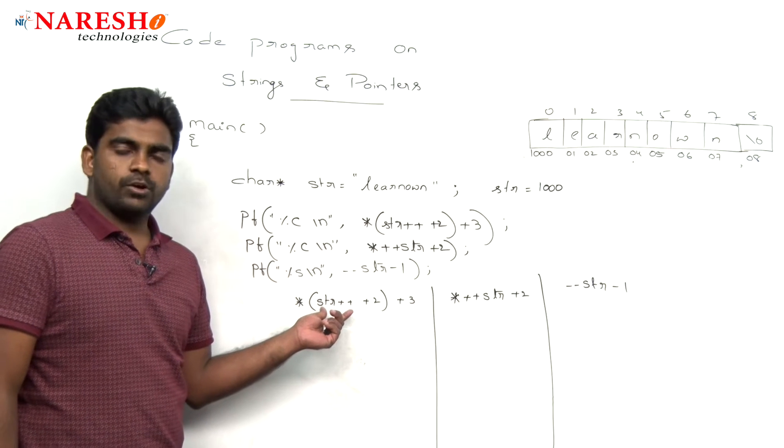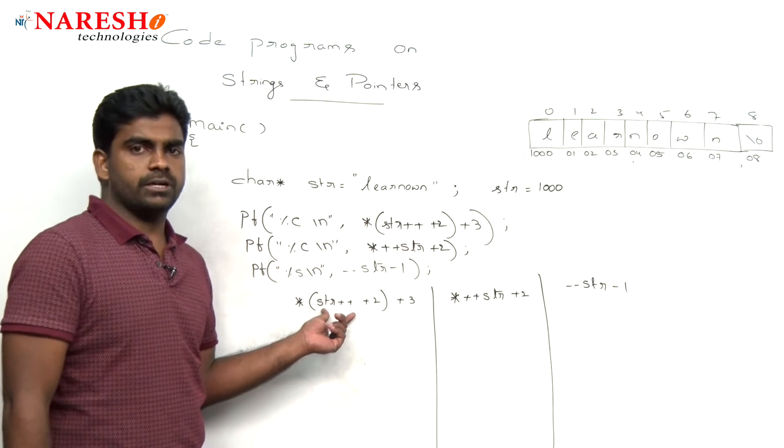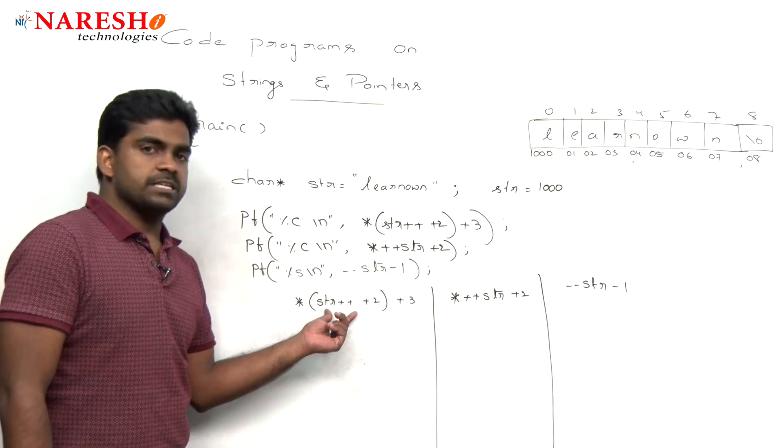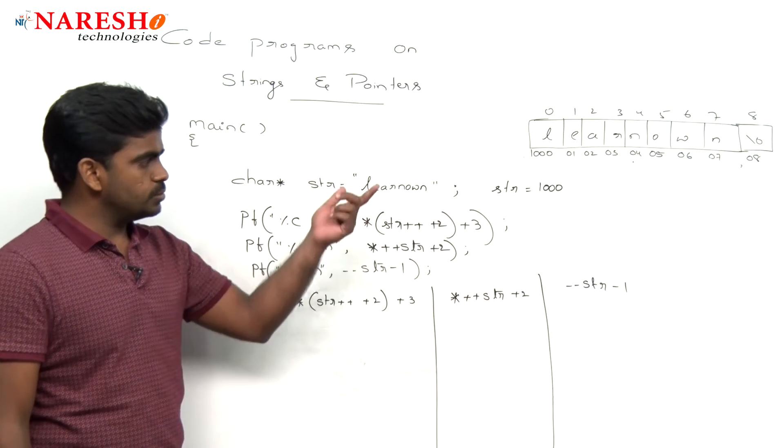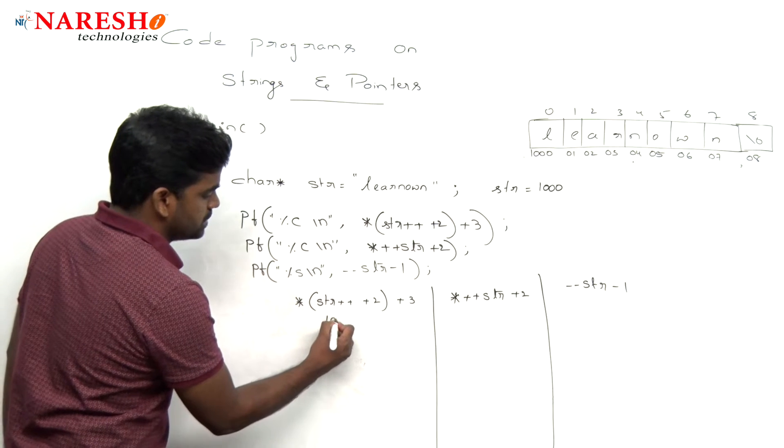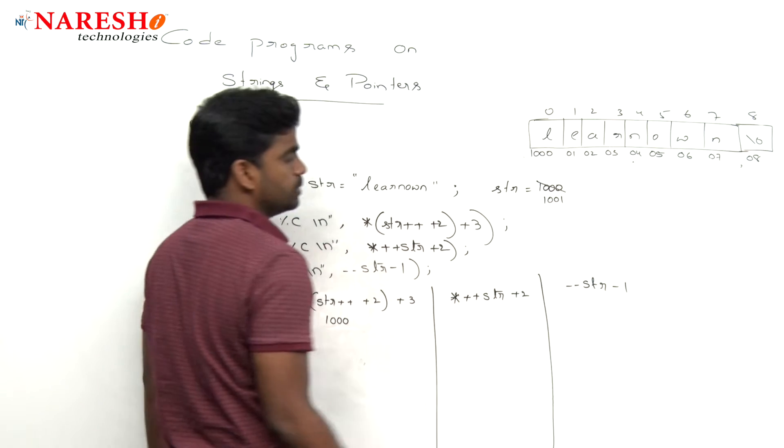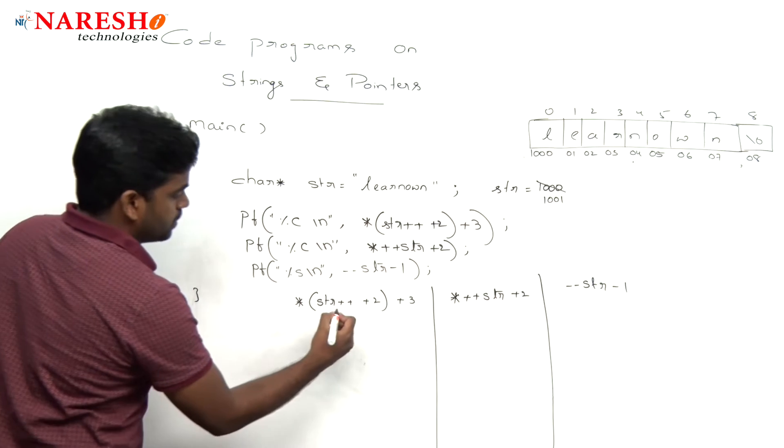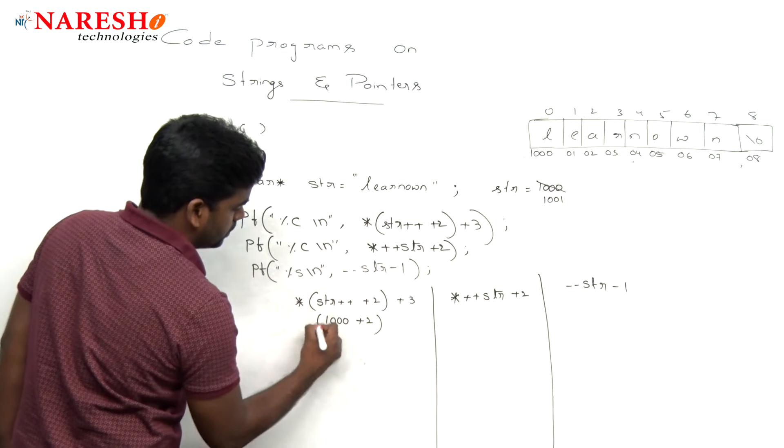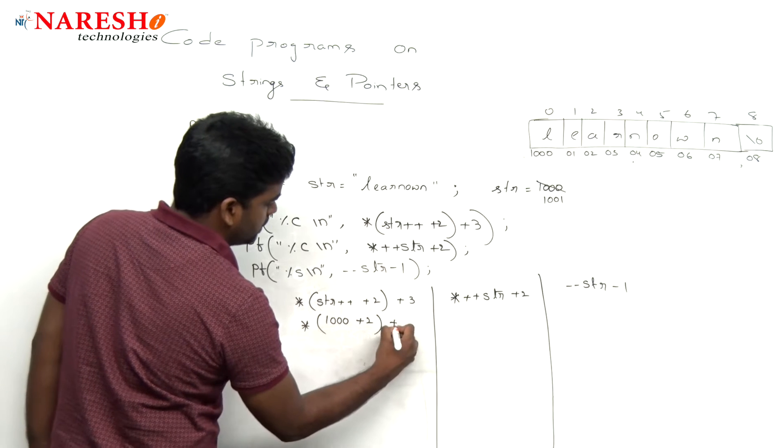The first one: modify operators take the priority. Here it is str++, but it is a post increment. So the value thousand will be substituted and the value becomes thousand and 1. It is pointing to the next location plus 2.